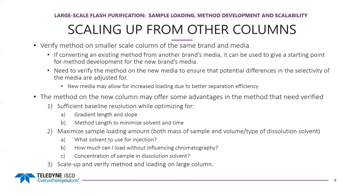Once we've verified and corrected for any potential differences in selectivity, we can evaluate our loading capacity. When switching media, consider: is the compound being retained more or less? You might need to decrease percent B to accommodate more retention, or increase percent B if it's not coming out soon enough. Then optimize the method length and maximize the sample loading — what solvent for injection, how much can we load without influencing the chromatography, and what's the concentration of our sample in the dissolution solvent. Then scale up, verify the method, and try it on the large column.